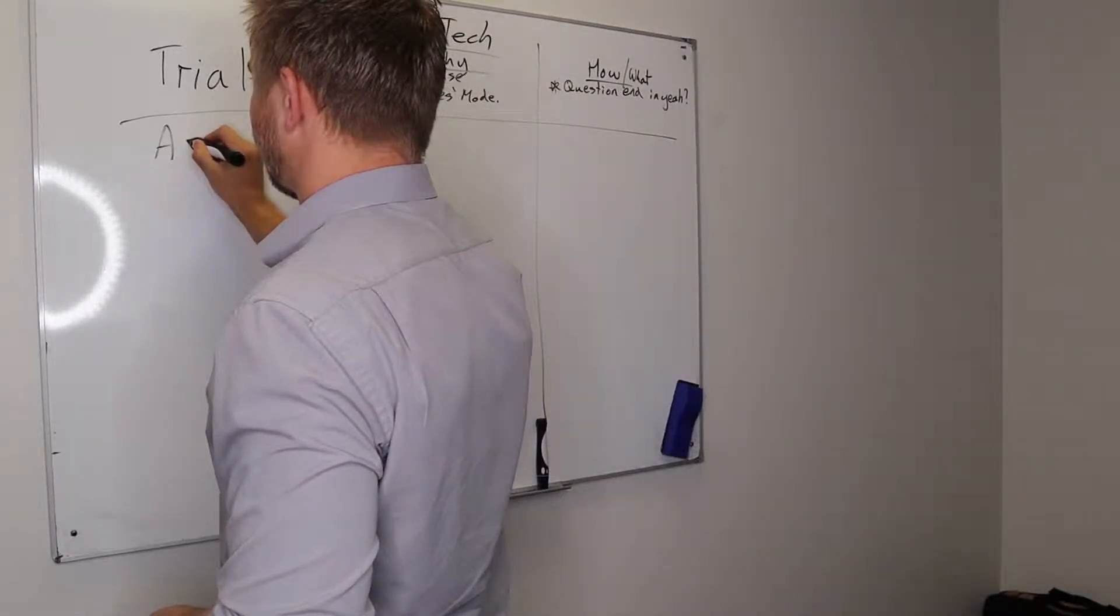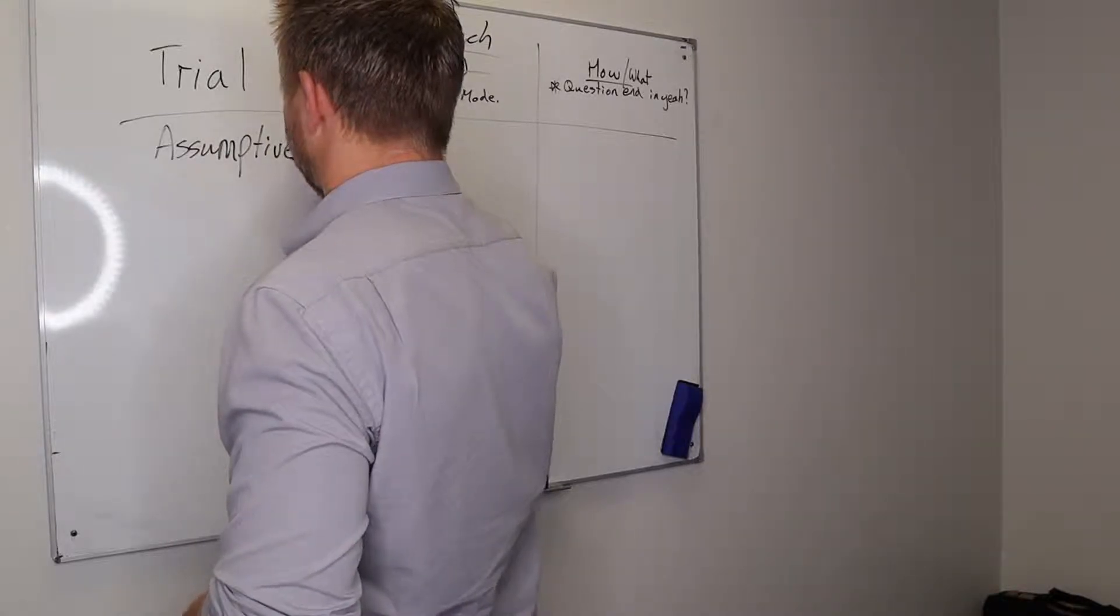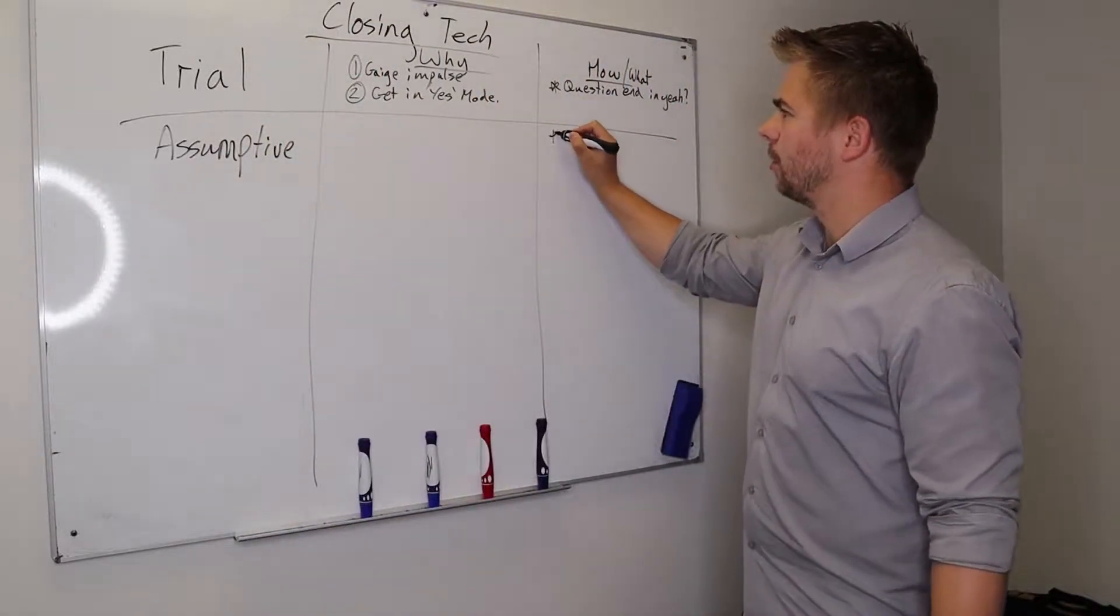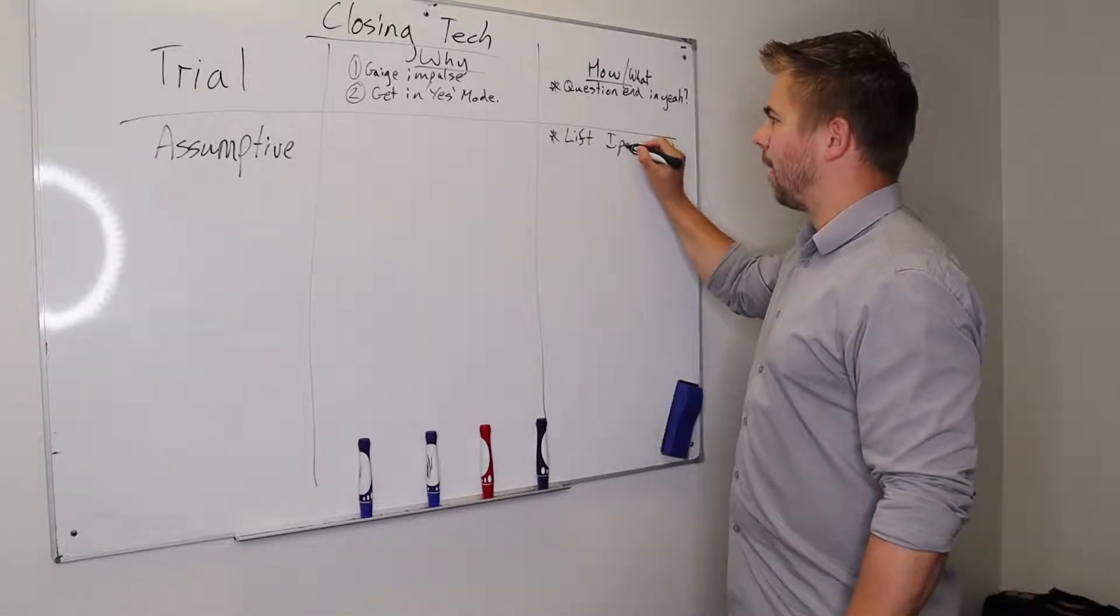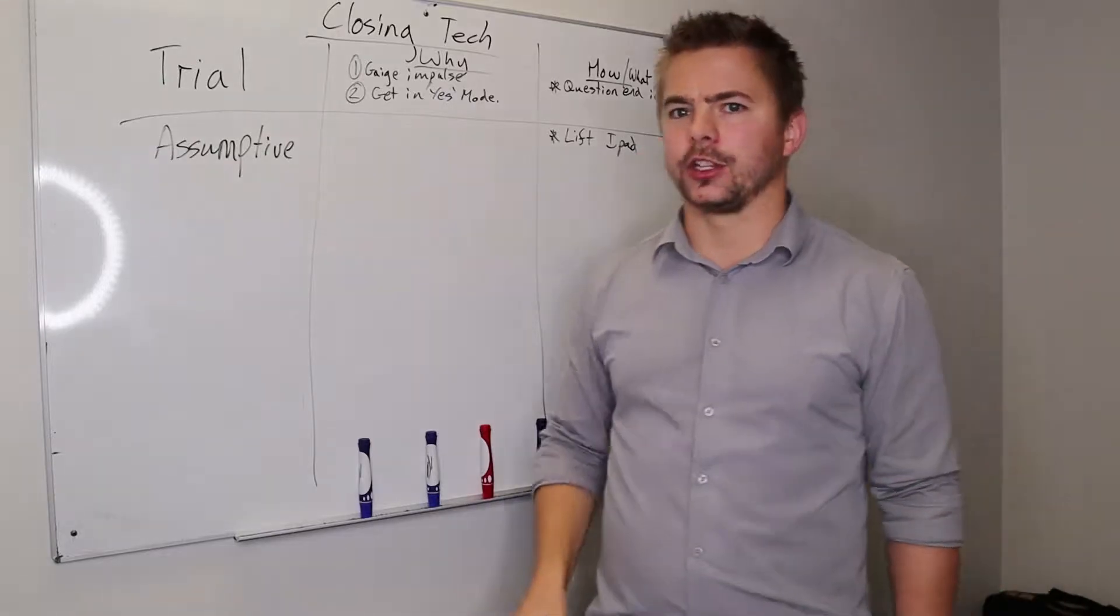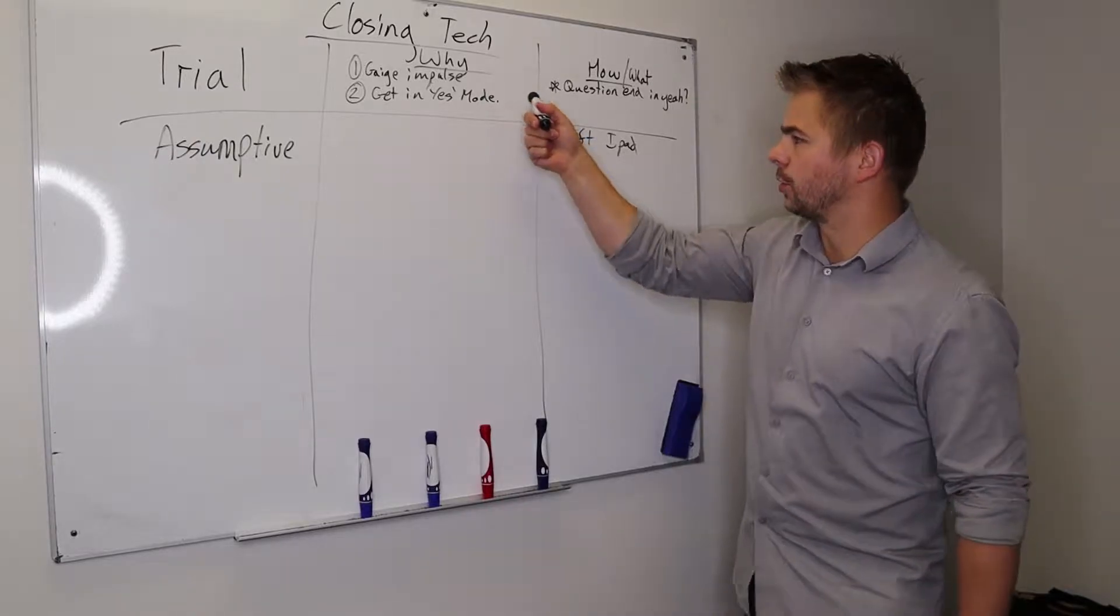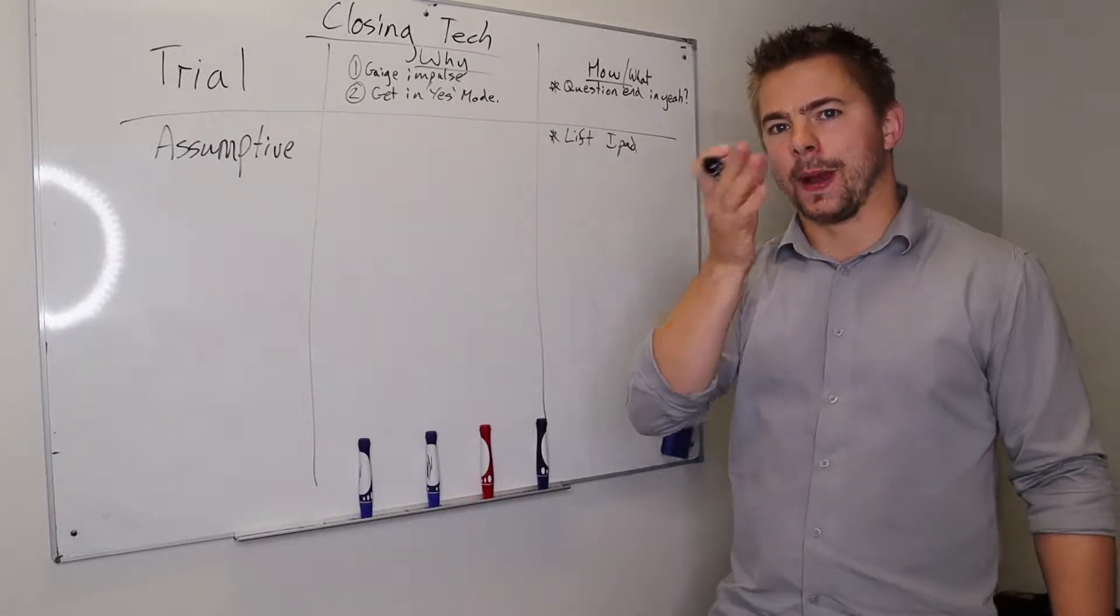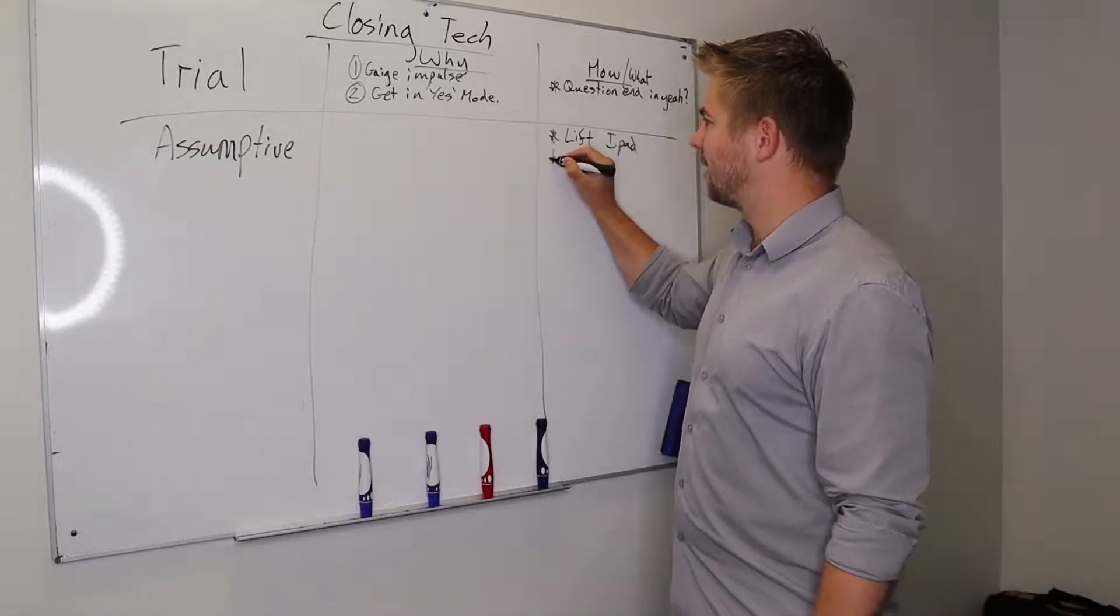The second closing technique is an assumptive close. So with the assumptive close, how you do it is lift the iPad. So you just lift the iPad and assume that they're going to get on board. That doesn't mean you're just lifting the iPad randomly. Obviously, you normally like to follow a trial close with a lift of an iPad, but you just assume that they're getting on board. No hesitation.